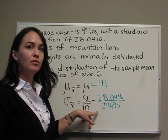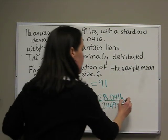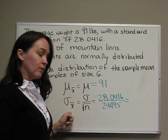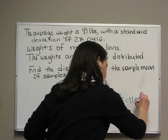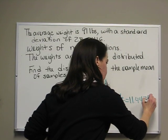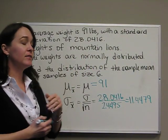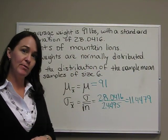Now we take these two numbers and divide, and we see that our standard deviation of our sample means is 11.4479. And that is all there is to find in the distribution of the sample means.